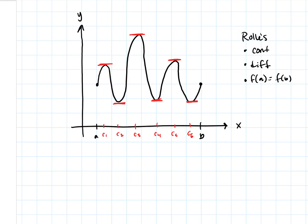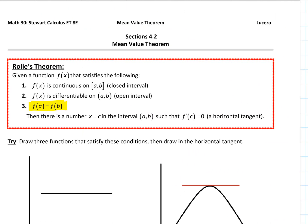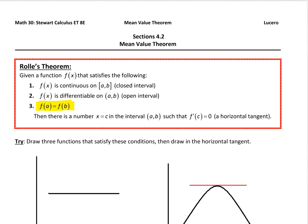Rolle's Theorem says there has to be at least one — I happened to have six. Those c sub i values are all points in the open interval from a to b where f'(c sub i) equals zero. I used c sub i because I had six of them, but you will have at least one, and you may have more. You might even have an infinite number — I'll show you that in just a second.